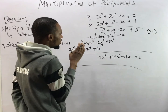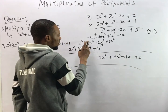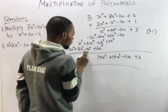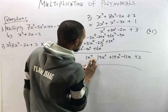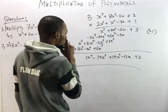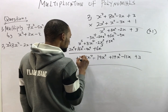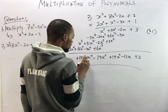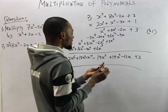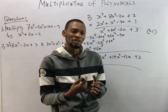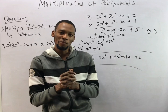For s⁴: minus 3s⁴ plus 8s⁴ gives 5, and 5 minus 4 gives 1, so 1s⁴. For s⁵: s⁵ plus 16s⁵ gives plus 17s⁵. And finally, 2s⁶. So the final answer for Question 2 is: 3 minus 11s plus 17s² plus the s³ term, plus s⁴ plus 17s⁵ plus 2s⁶. That is all on multiplication of polynomials. Hope you found this lecture helpful — please subscribe to this channel and let others know. Thank you.